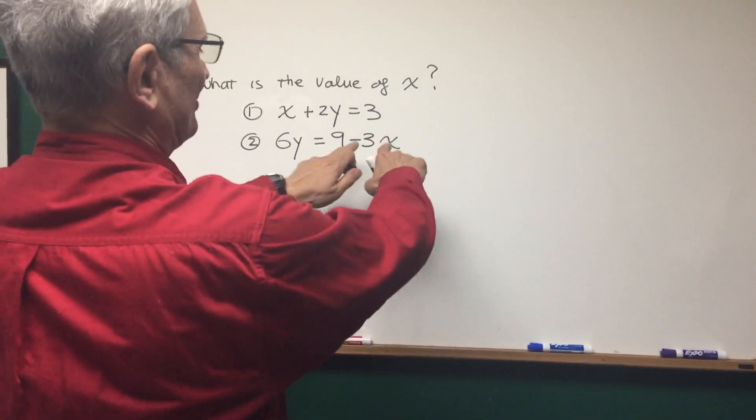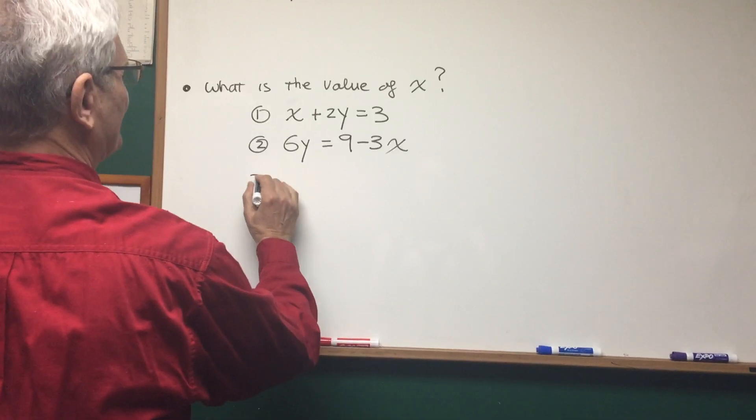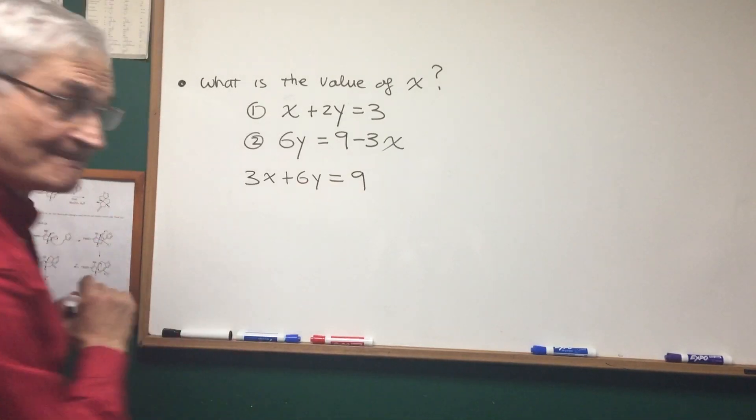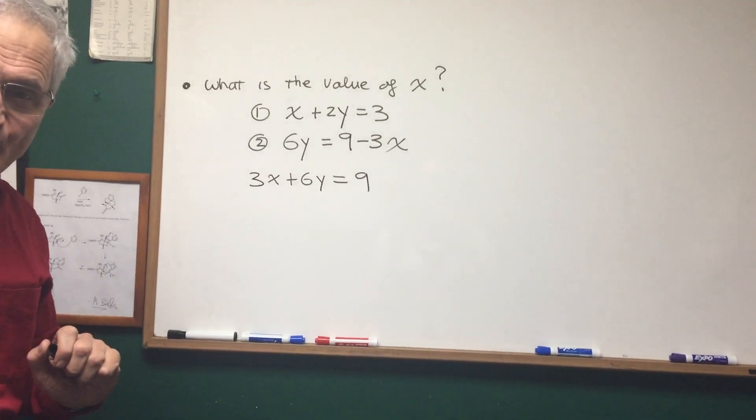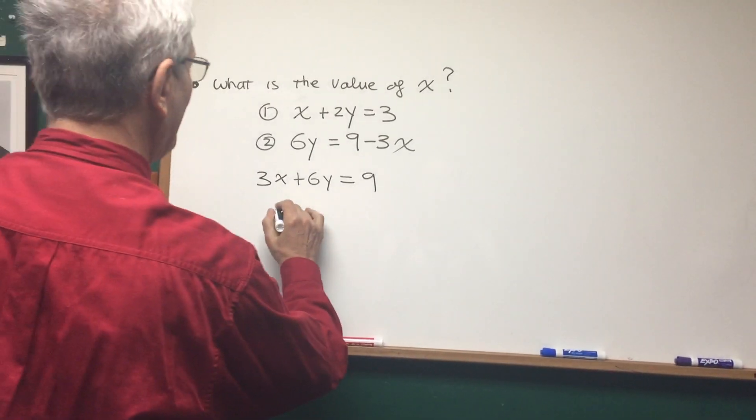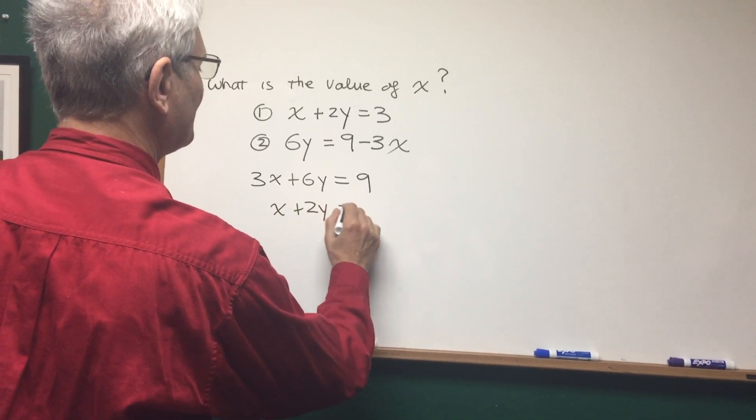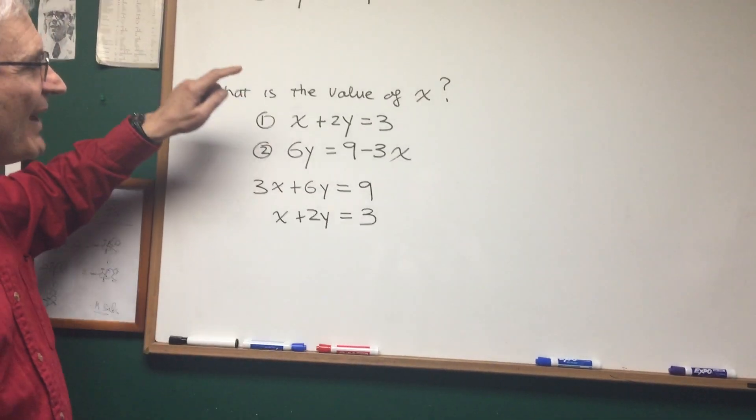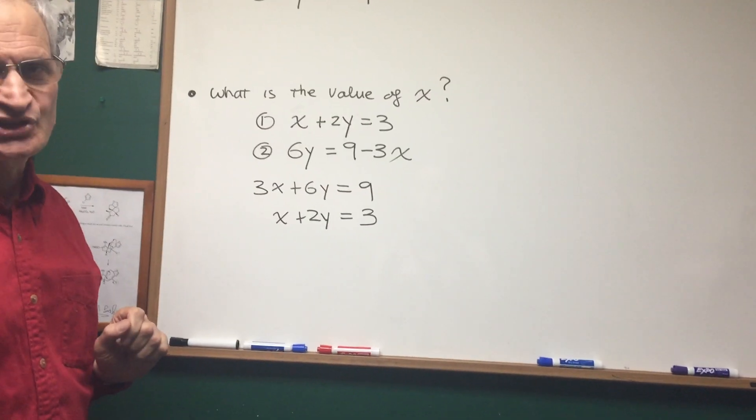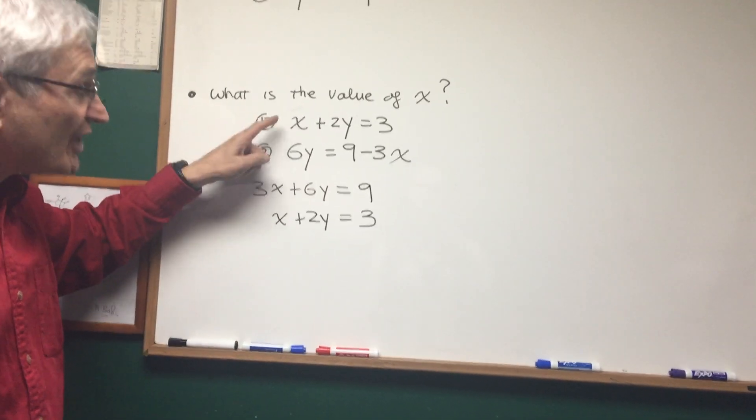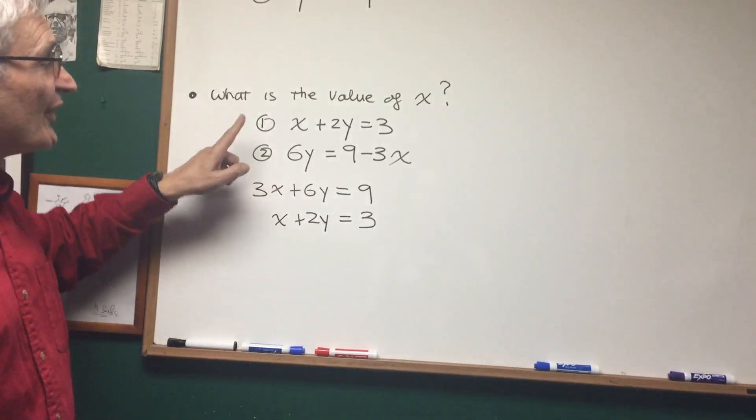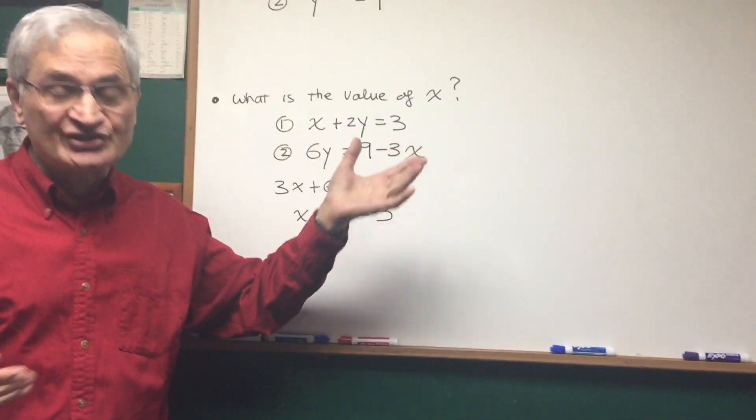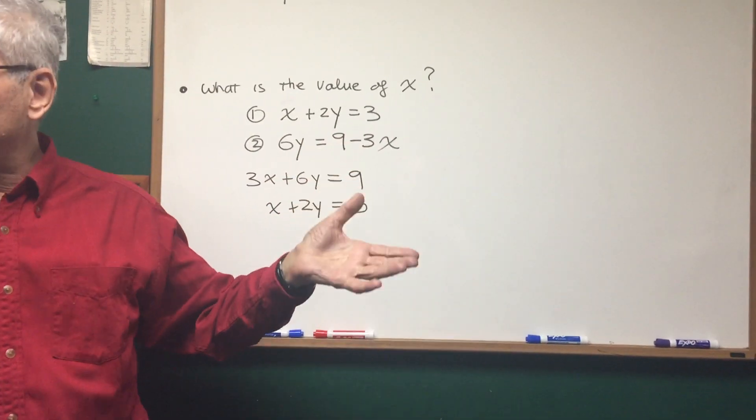Let's look a little more carefully at statement 2. Okay, let's rearrange statement 2. Let's add 3x to both sides of statement 2. It becomes 3x plus 6y is equal to 9. Now, let's divide both sides of this equation by 3. What do we get? x plus 2y is equal to 3. Does that look familiar? It's the same as the first equation. So, these are two equations, but they're not two independent equations. The second equation does not add any new information to the system of equations, and therefore, we cannot solve it. Our choice is E. Statements 1 and 2 together are not sufficient to answer the question.